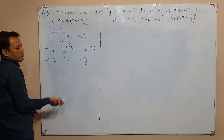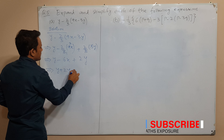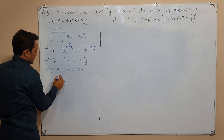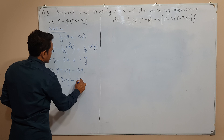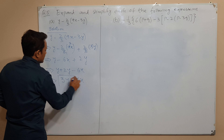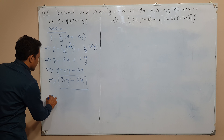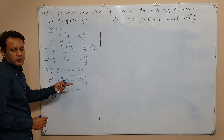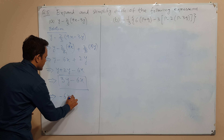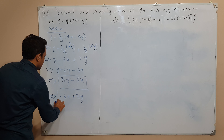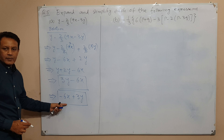तो अब हम like terms को एक साथ लिख लेते हैं। This implies that y plus 2y minus 6x, तो ये क्या हो जाएगा - y plus 2y, this implies that 3y minus 6x। तो ये हमारा answer हो जाएगा part a का। Normally हम alphabetical order में लिखते हैं, जो x होता है वो पहले आता है, तो हम इसको इस तरह भी लिख सकते हैं: minus 6x plus 3y। Both answers are correct।